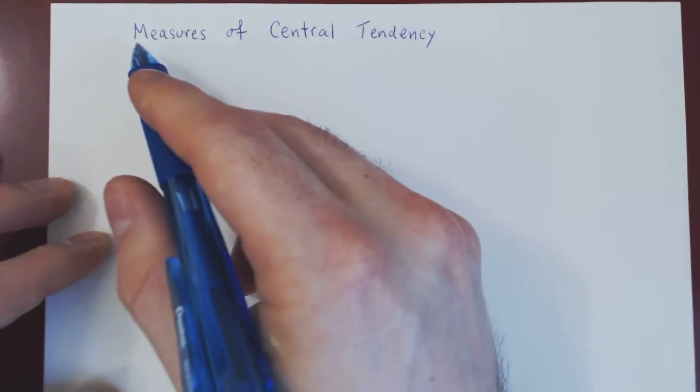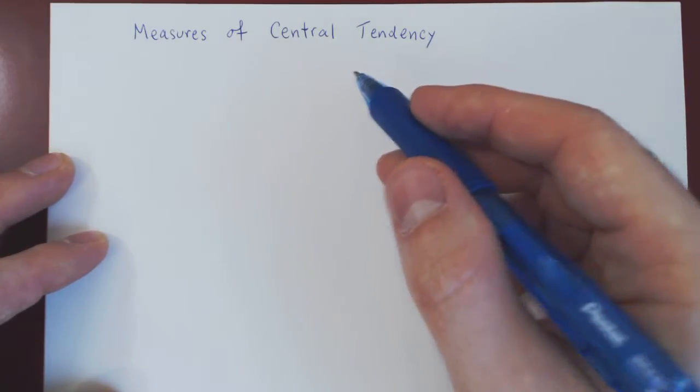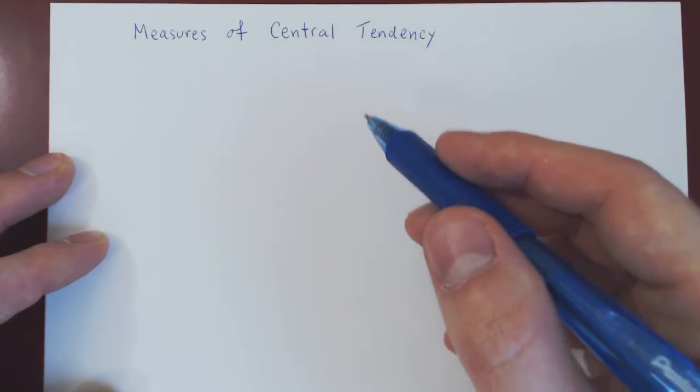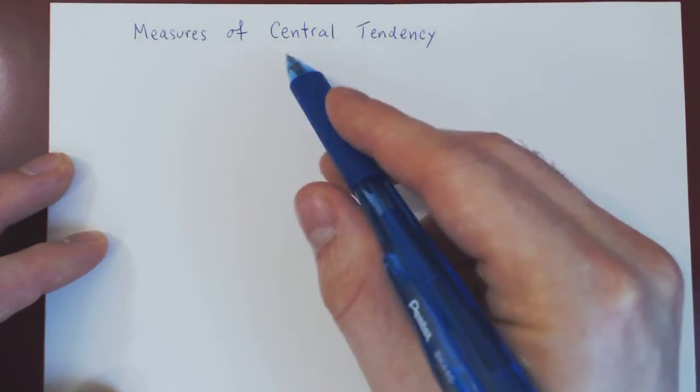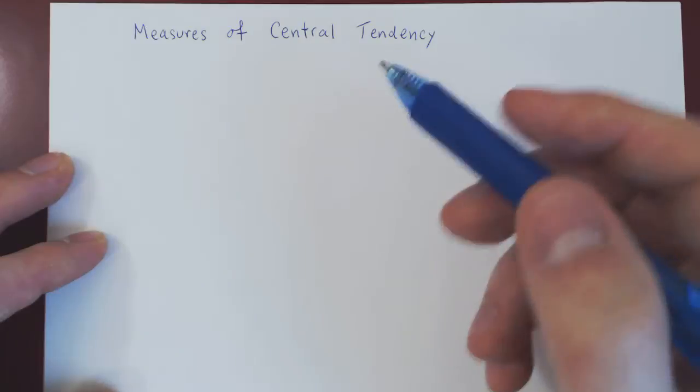Okay, so in this video we will cover measures of central tendency. The idea is we'll have a set of data, numerical values, and we're going to ask in which ways can we find the center of our data set. And we will consider four such measures.